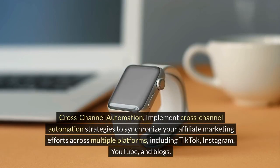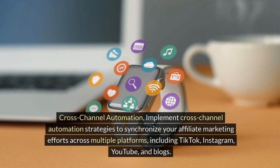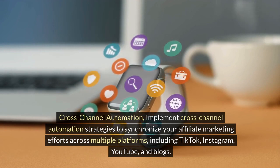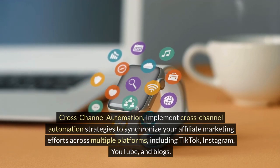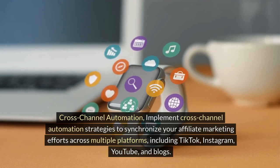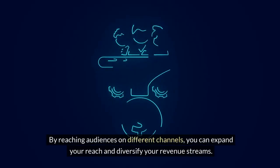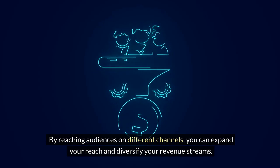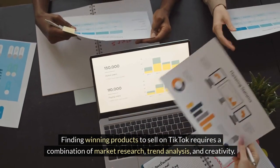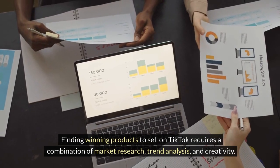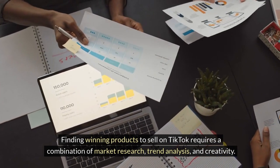Cross-channel automation. Implement cross-channel automation strategies to synchronize your affiliate marketing efforts across multiple platforms, including TikTok, Instagram, YouTube, and blogs. By reaching audiences on different channels, you can expand your reach and diversify your revenue streams. Finding winning products to sell on TikTok requires a combination of market research, trend analysis, and creativity. Here's a step-by-step guide to help you identify profitable products.